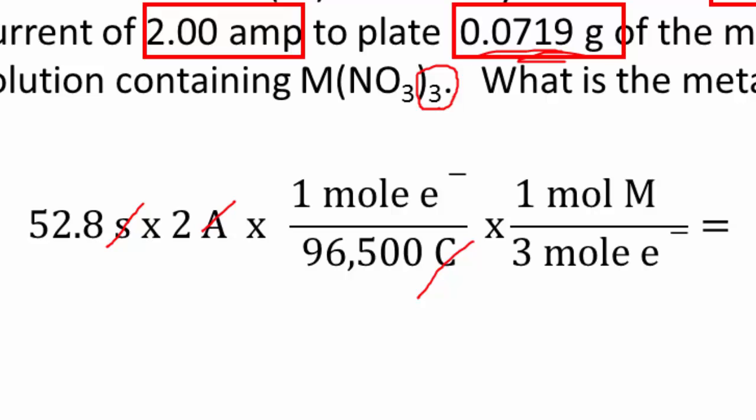So basically the coulombs is going to cancel with amps times seconds because amps times second is a coulomb. Now we have moles of electrons. Now we want to go from moles of electrons to moles of the metal. So we looked at this charge and this is what told us for one mole of the metal we get three moles of electrons. So this is where this part comes in right here.